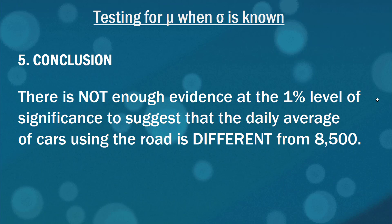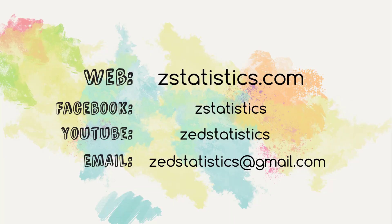So there you have it. There's testing for mu when sigma is known. The next video will be for when sigma is unknown, which in my mind is quite a bit more realistic. I'm Justin Zeltzer and this is Zed Statistics. Here's some links to keep in touch.